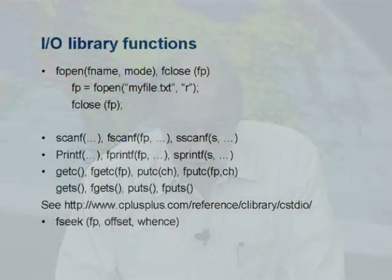C also permits a character string to be used as if it were a file — after all, a character string is also a stream of bytes terminated by a null character. Just as you can read input from a stream of bytes in a file, you can also read input from a string. Similarly, instead of writing bytes in a formatted fashion to an output file or stdout, you can write to a string. So you consequently have sscanf and sprintf as additional commands.